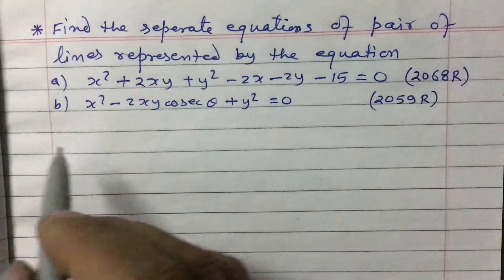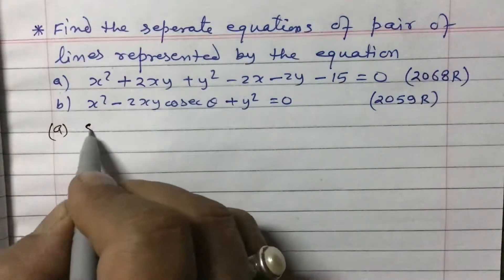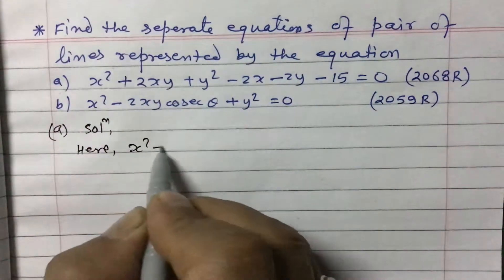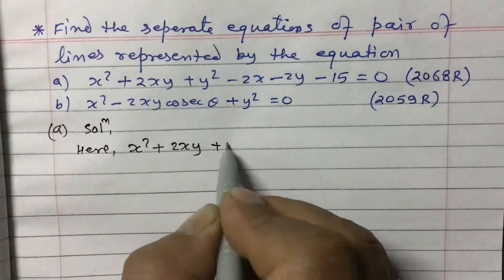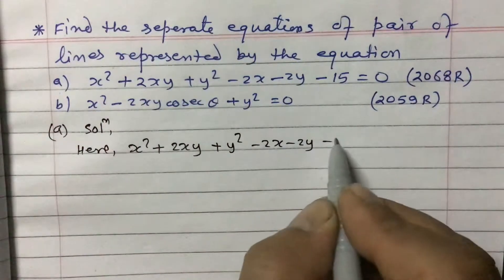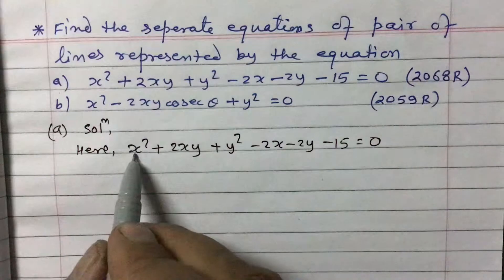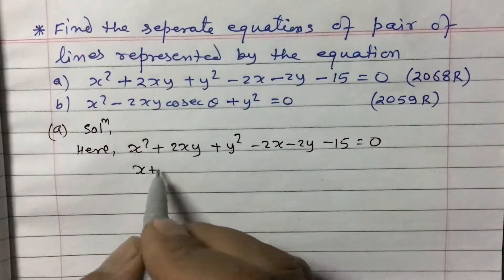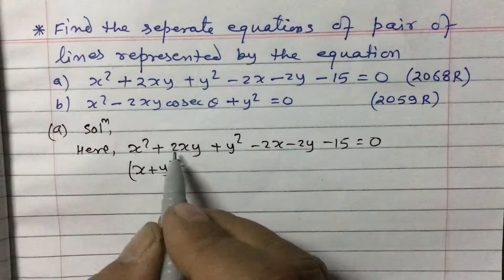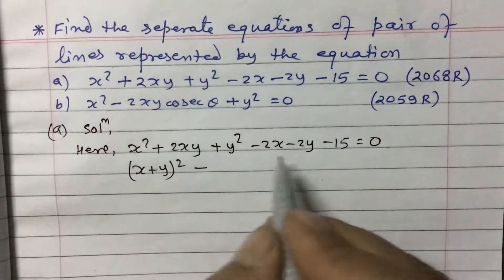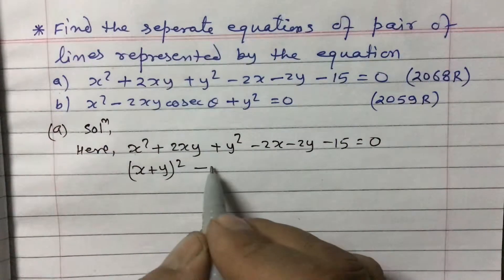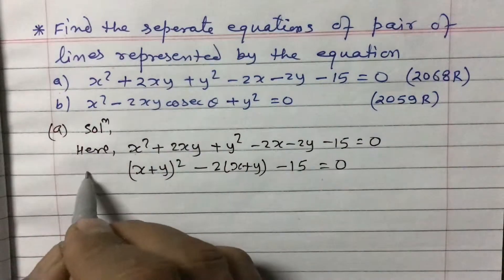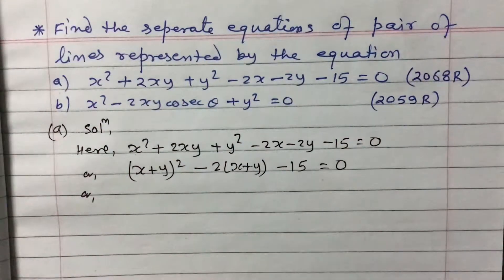Let us solve these two. First, for question A, the equation is x² + 2xy + y² - 2x - 2y - 15 = 0. The first three terms are in the form of the formula a² + 2ab + b², which gives (x + y)². Taking -2 common from the next two terms gives -2(x + y), so we have (x + y)² - 2(x + y) - 15 = 0.